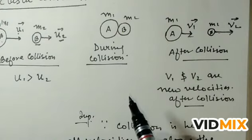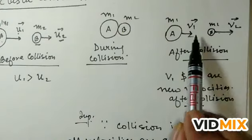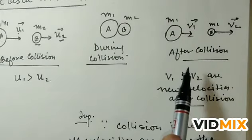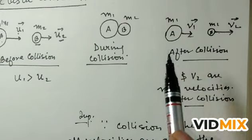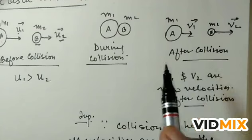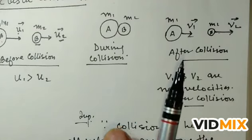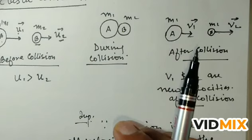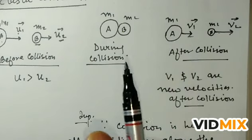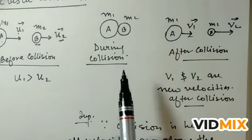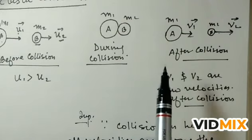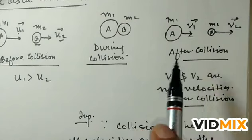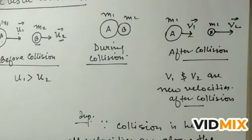This is an example of elastic collision, and how to find v1 and v2 from this situation will be derived in the next video. In the next video we are going to derive the relation to find the velocities of the two bodies after collision. Till then, thank you, have a nice day.